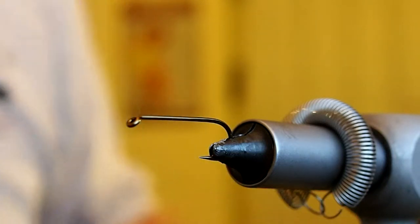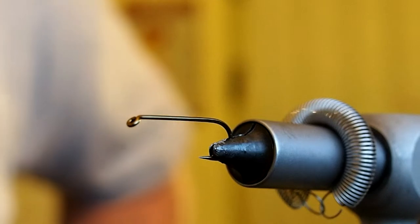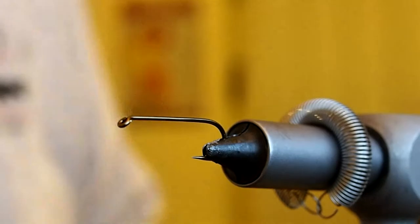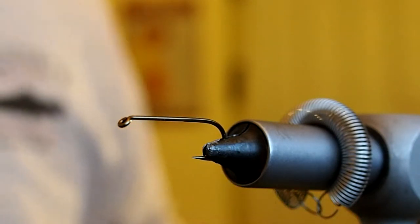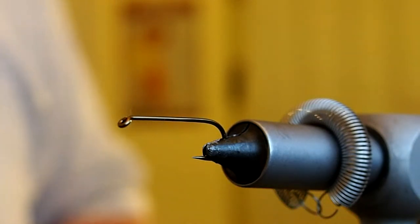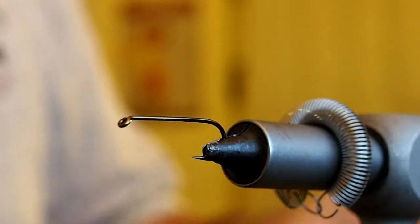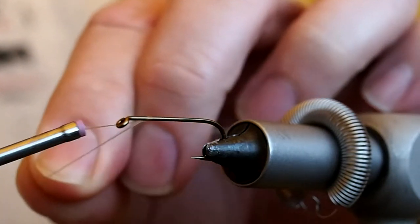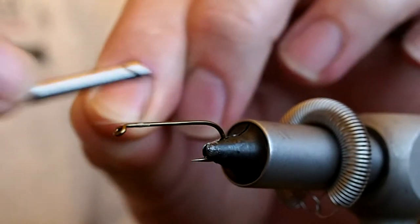It calls for a size 6 4x long hook. I think a 2x long is just fine, so that's what I have in the vise, a Daiiki 1710 in a size 6. I'm going to be tying this fly with Danville's fluorescent white nylon and I'm going to go ahead and lay down a base of thread. I'm going to start about a hook eye's length or hook eye's length and a half behind the eye.